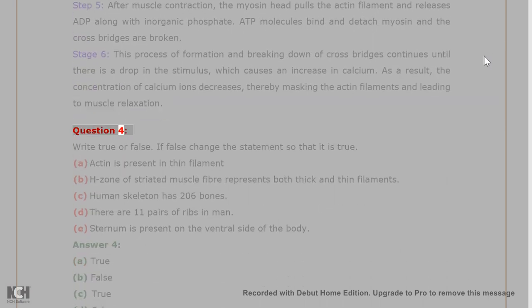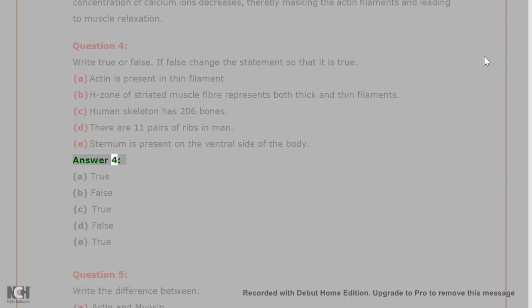Question 4. Write True or False. If False, change the statement so that it is true. A. Actin is present in thin filament. B. H-zone of striated muscle fiber represents both thick and thin filaments. C. Human skeleton has 206 bones. D. There are 11 pairs of ribs in man. E. Sternum is present on the ventral side of the body.